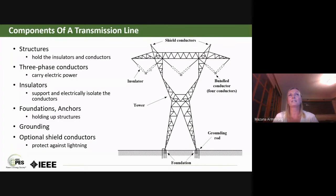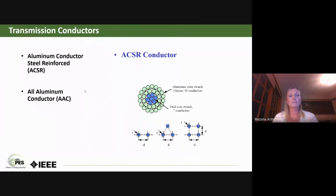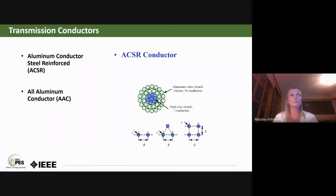Conductors are typically aluminum steel reinforced — we don't use copper because it's very expensive. Aluminum is used and if additional strength is needed, steel strands are incorporated. Steel is in the middle and aluminum surrounds it. Most conductors used in British Columbia are ACSR, which stands for Aluminum Conductor Steel Reinforced.